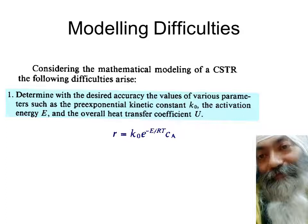For first-order kinetics, the questions that come to mind are: do we really know the exact value of K0? Do we exactly know the value of activation energy E? In case you are using a heat exchanger, do we really know the proper value of the overall heat transfer coefficient U? If these parameters are not properly known, the accuracy of the model that ultimately emerges will also not be accurate.